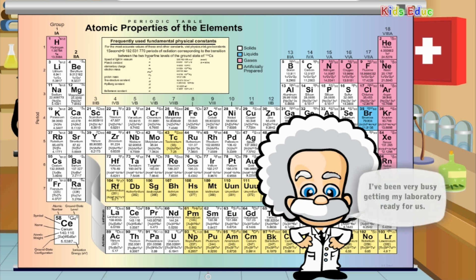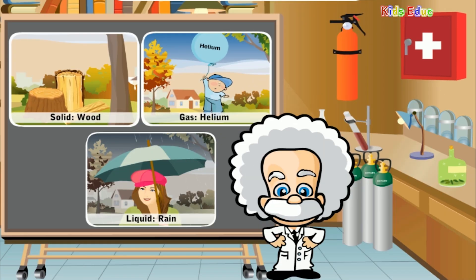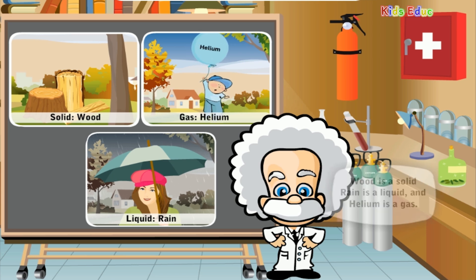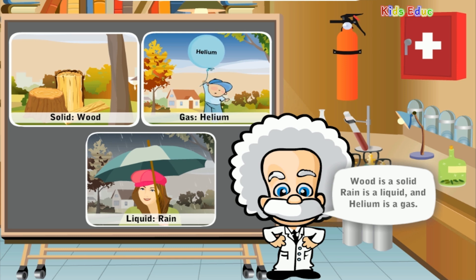I've been very busy getting my laboratory ready for us. As I discussed in the states of matter course, matter is everywhere and takes up space. It comes in three forms: solids, liquids, and gases. For example, wood is a solid, rain is a liquid, and helium is a gas. We see and touch many solids and liquids every day.